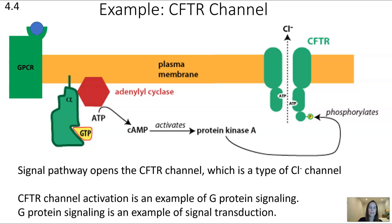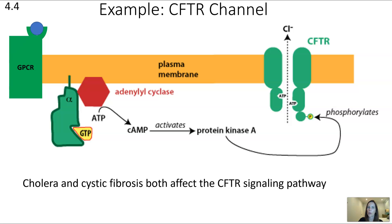The CFTR channel activation is an example of G protein signaling, which itself is an example of signal transduction. This example is highly relevant because the CFTR channel is involved in both cholera and cystic fibrosis, diseases that affect a large number of people around the world. That's it for this video — we have covered units 4.2, 4.3, and 4.4 of AP Biology: signal transduction.